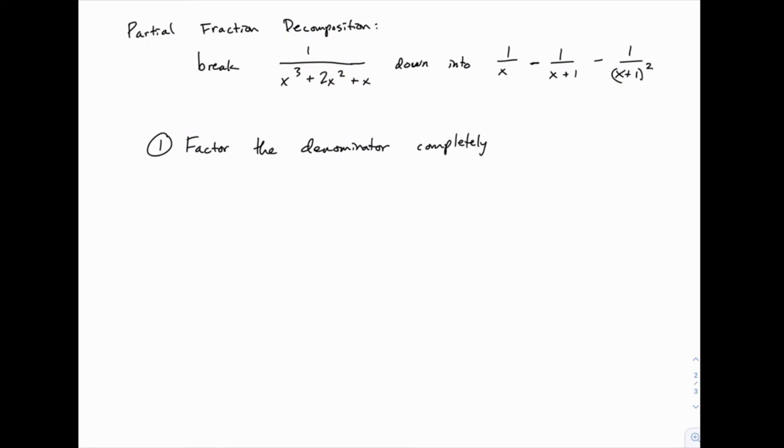The first thing you want to look for when factoring is any common factors. Before you do anything else, look for anything in common that you can pull out from all these terms. Notice there's an x in all these terms, so we can pull out x, leaving x² + 2x + 1.